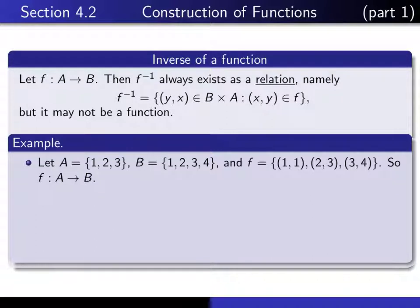If A is the set consisting of the integers 1, 2, and 3, and B the integers 1, 2, 3, and 4, then this relation f is certainly a relation from A to B. But you'll notice that the domain, which is the set of first elements, is all of A.